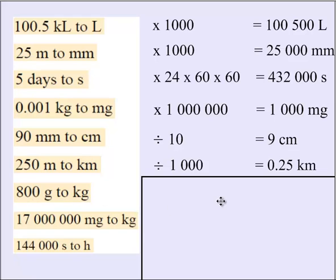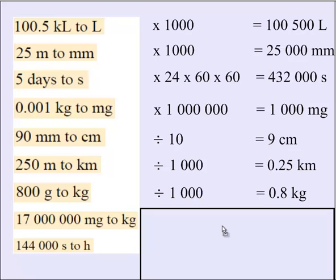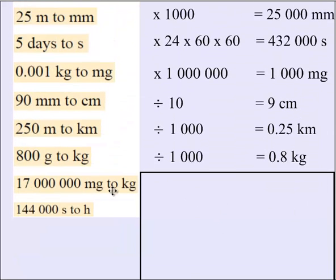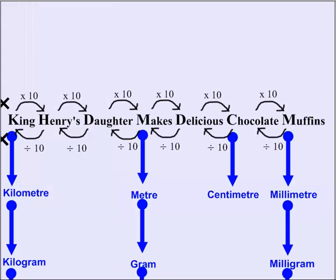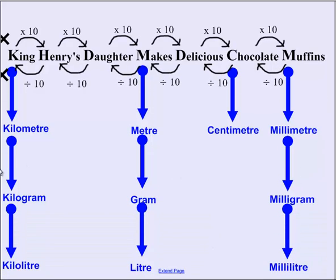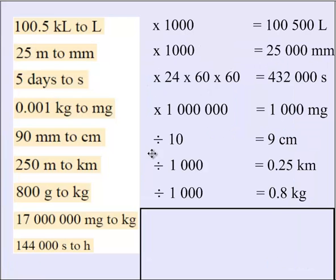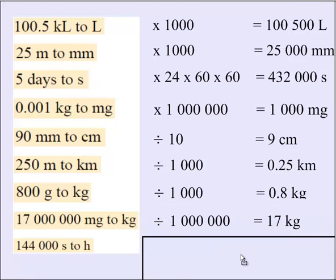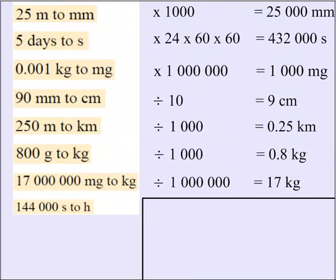All right, a couple left. 800 grams to kilograms, we're going to need to divide by 1,000. We've got the smaller measurement, and we're going into a bigger one. So we expect a smaller number. So that's how we know to divide. We've got 17 million milligrams to kilograms. So we're going from extremely small measurement into an extremely large measurement. And having a look at King Henry, milligrams is all the way over here, and kilograms is all the way up here. So we know that there is one, two, three, four, five, six jumps. So we need to divide by six zeros, or 1 million, giving us 17 kilograms.